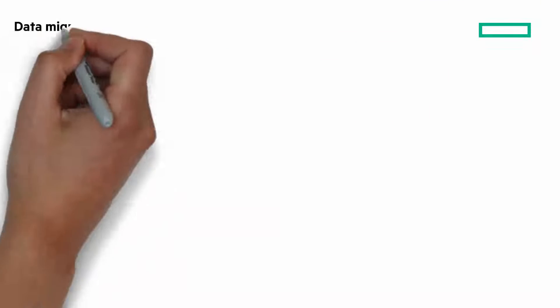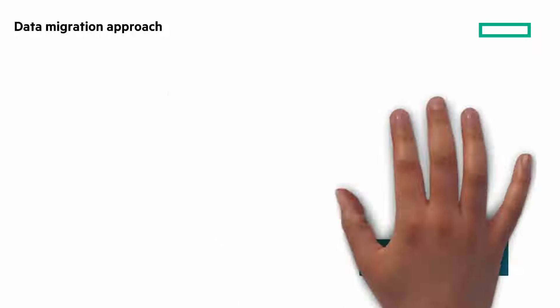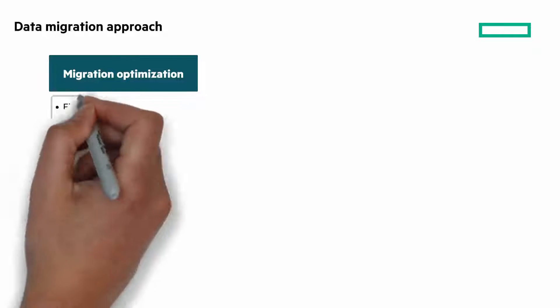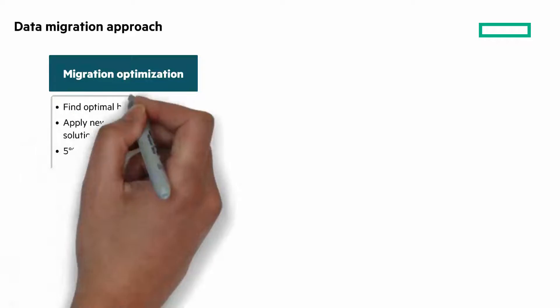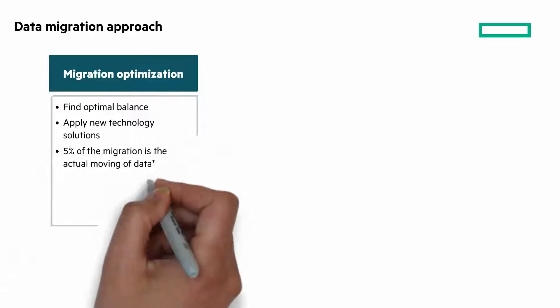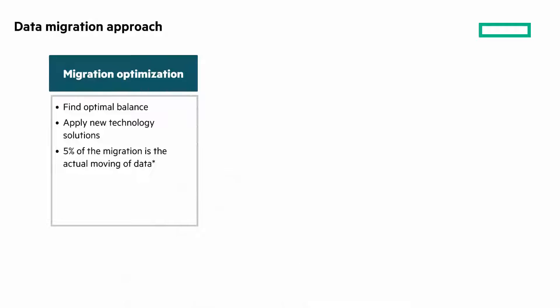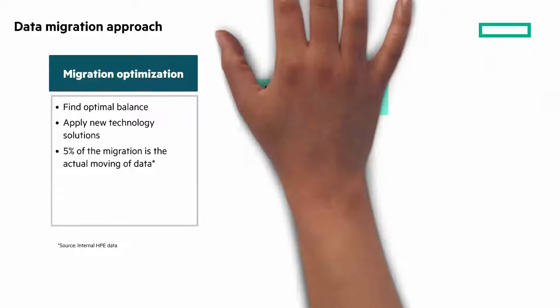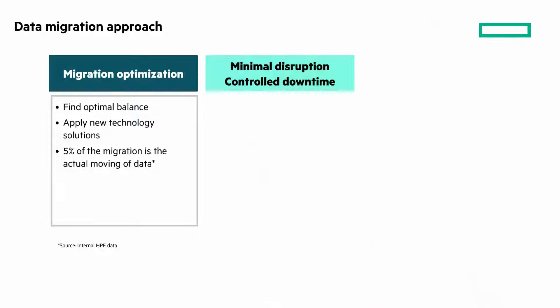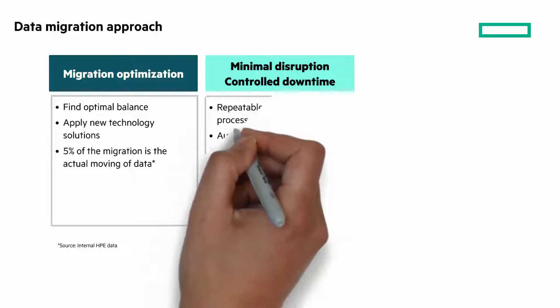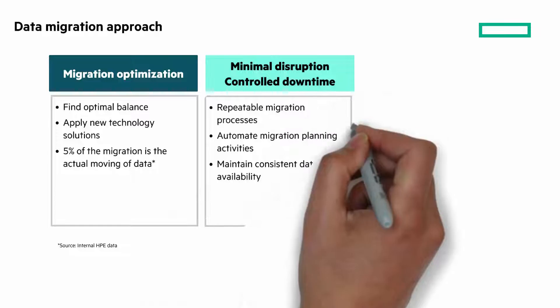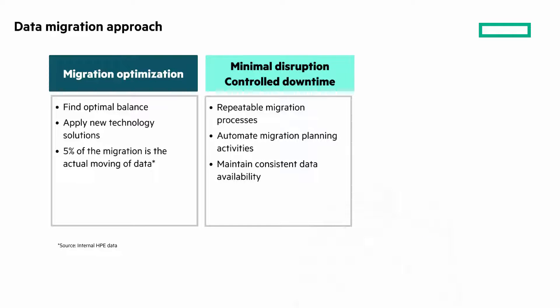Our approach to data migration is focused on optimization and minimizing business disruption. Our optimization approach is to find the balance between data accuracy, migration speed, downtime, and costs. And what we've learned is that moving data is only 5% of the migration effort, so planning is critical to success. To minimize disruption, we use repeatable migration processes, automated planning activities, and maintain consistent data availability.